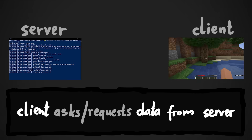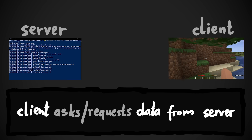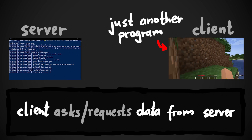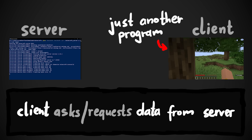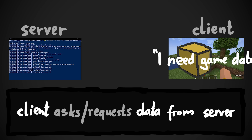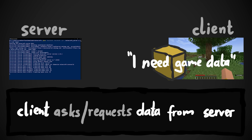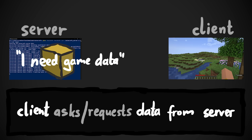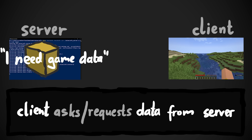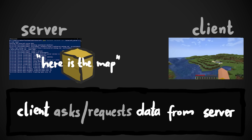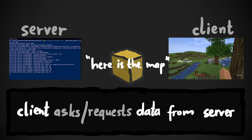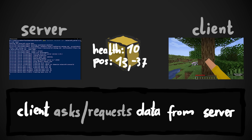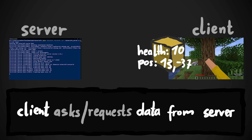So in the case of a Minecraft client and server, your game client — which is by the way also just another program — asks the server: hey, I want to play here, I need some information, can you please give me the world data? And the server sends you part of the world and also tells you your life total and your position.